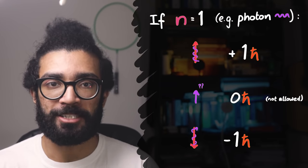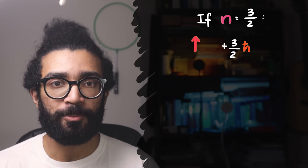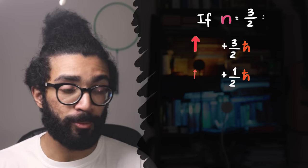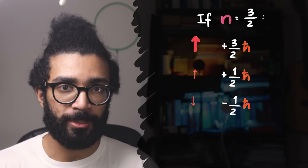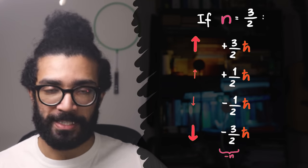A particle described as being spin 3 over 2 has four different states. In one of them, you find the particle with an angular momentum 3 by 2 h-bar. In one of them, it's half h-bar. In one of them, it's negative half h-bar. And the other one is negative 3 by 2 h-bar.